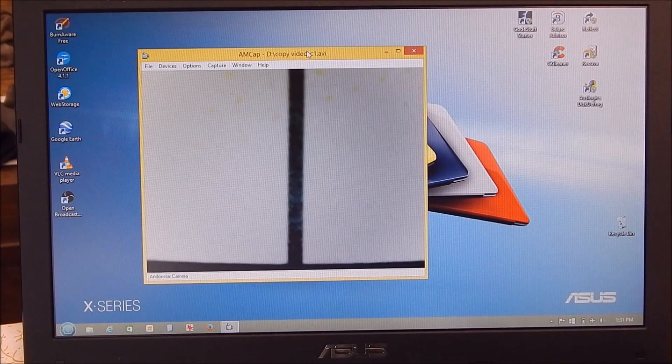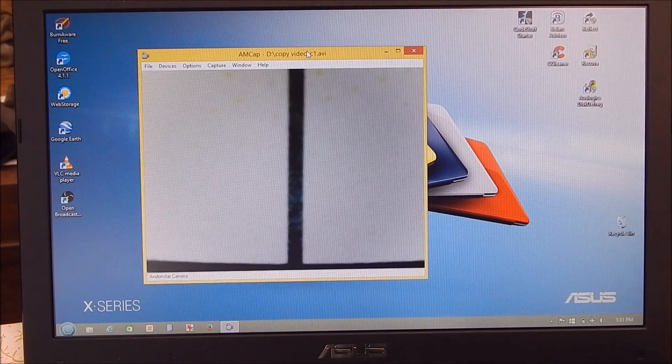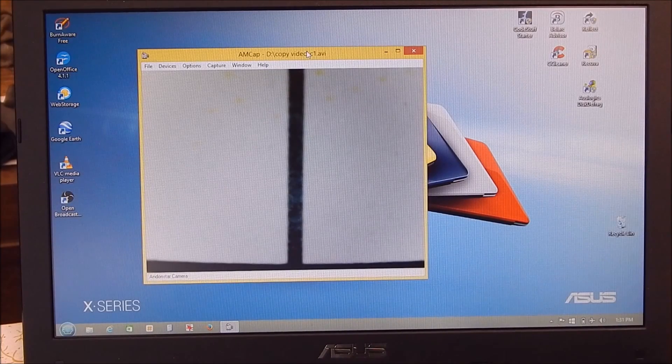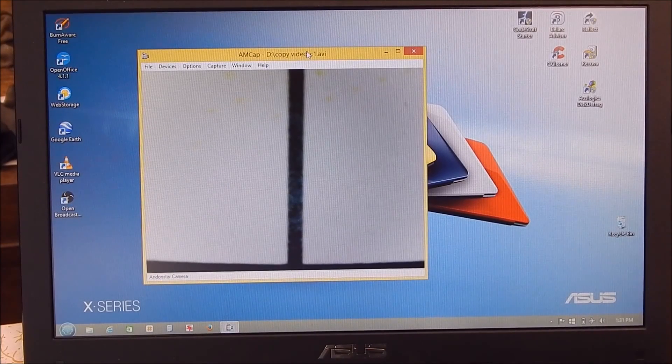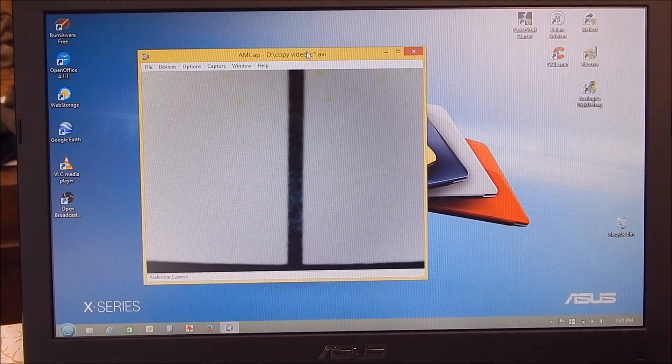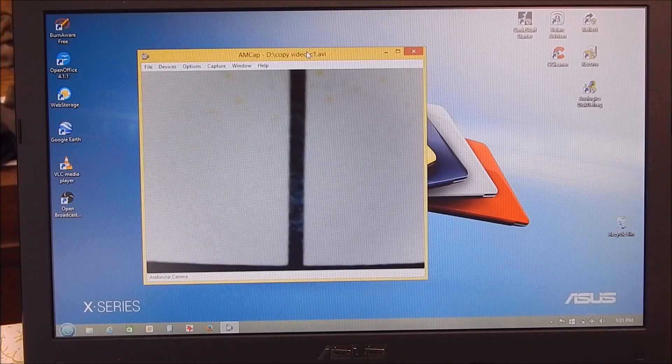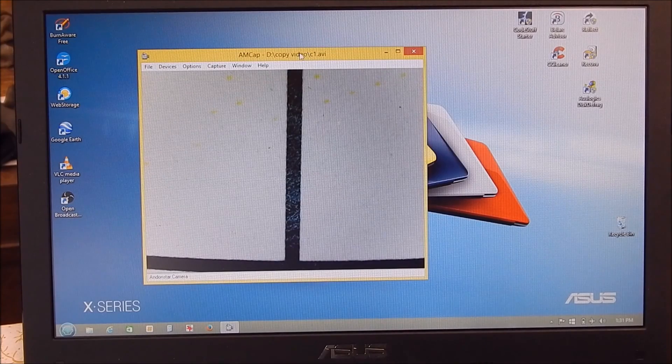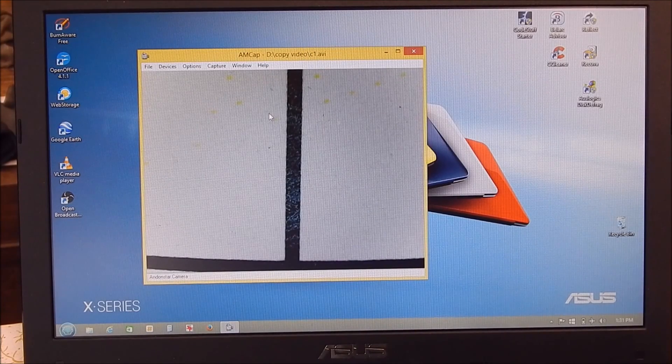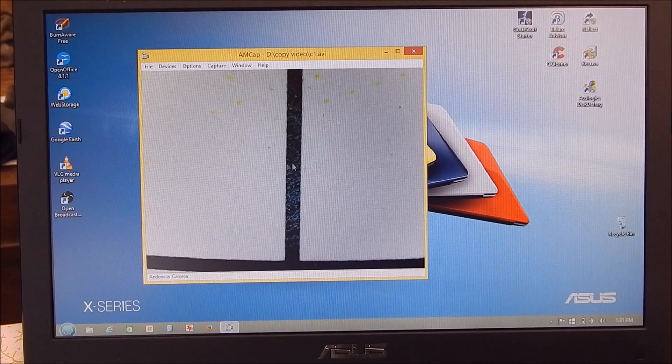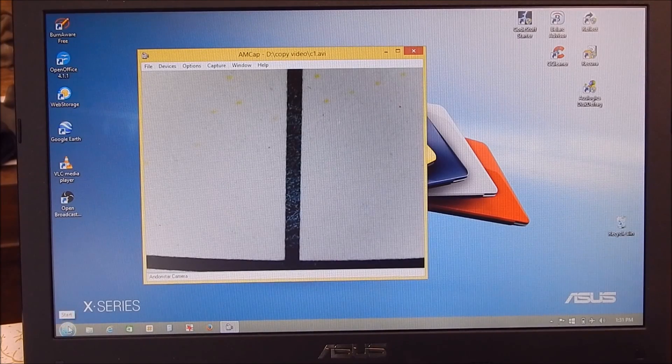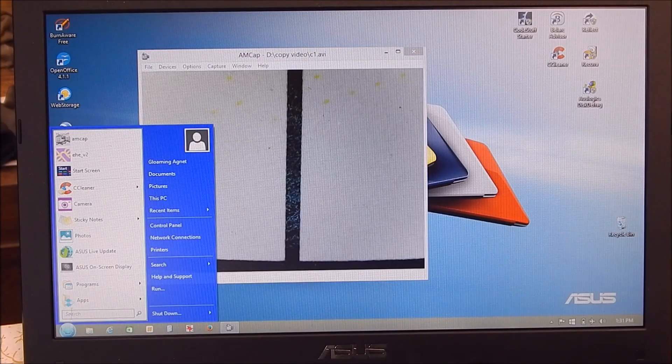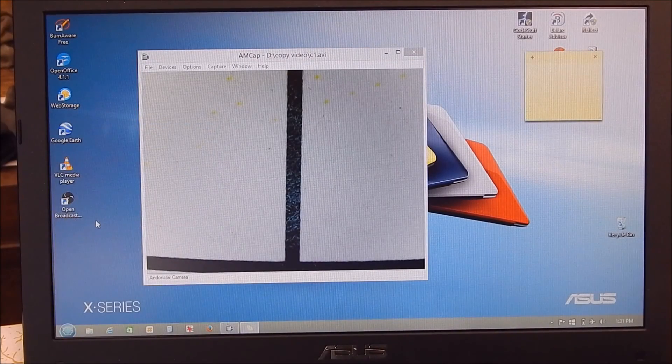And we can see the USB microscope image coming, showing one of the reference points on the reference disc. Obviously we're going to focus it a little bit better. That's pretty good. And now all we need to do is have some way of indexing it on the screen. To do that we're going to use sticky notes, like a sticky note.